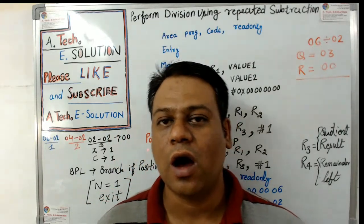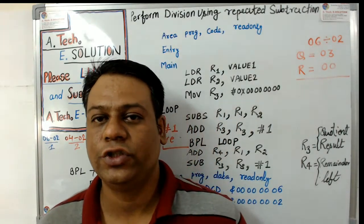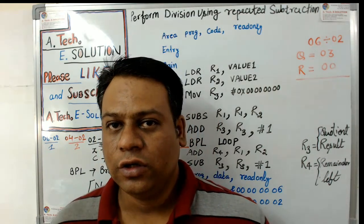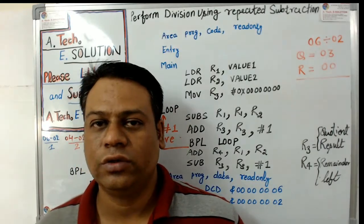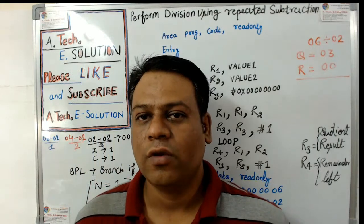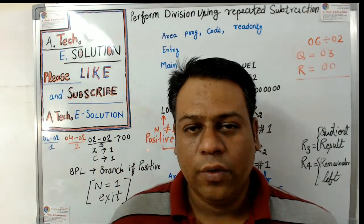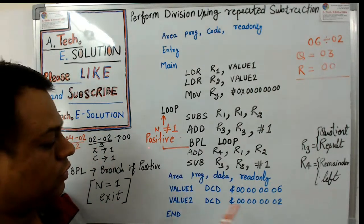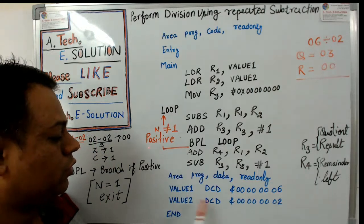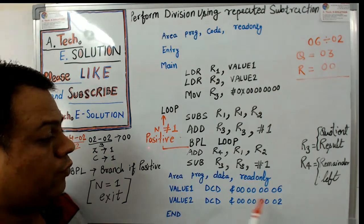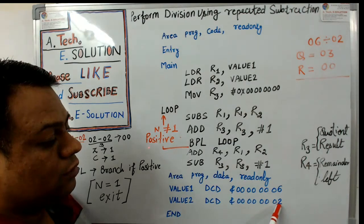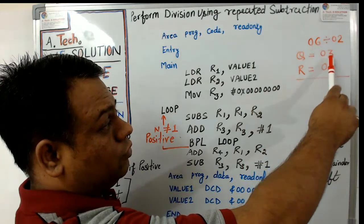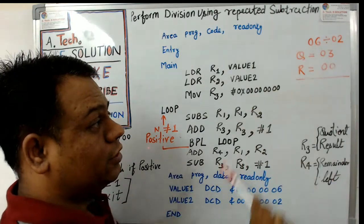We are going to discuss a simple ARM program in which we divide two numbers using repeated subtraction. We take the first number, value 1, as 06 and the second number, value 2, as 02. We are going to divide 06 by 02, so we will get a result of 03 in the quotient and remainder equal to 0.